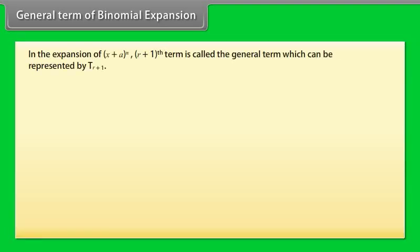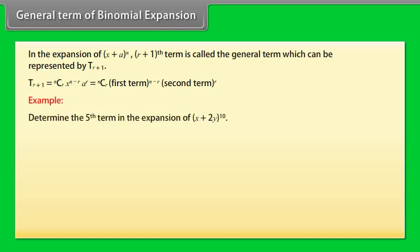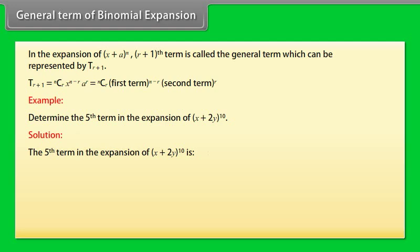General term of binomial expansion: In the expansion of x plus a raised to power n, the (r+1)th term is called the general term, represented by t(r+1). t(r+1) equals nCr into x raised to power n minus r into a raised to power r, which equals nCr times (first term)^(n-r) times (second term)^r. Example: Determine the 5th term in the expansion of x plus 2y raised to power 10. The result is 3360 into x raised to power 6 into y raised to power 4.